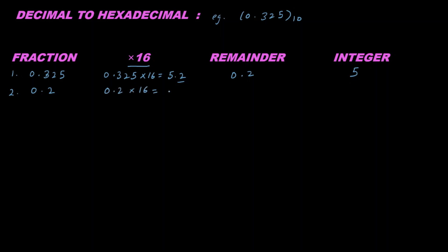In the third step, write 0.2 here. Again, 0.2 multiplied by 16 gives 3.2. Now this has started repeating, so I can write my answer because it will keep repeating.